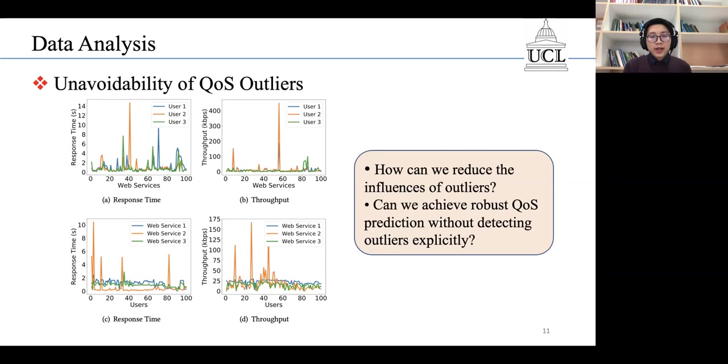So, the next question would be, can we achieve robust QoS prediction without detecting outliers explicitly? In this work, we try to address these two problems.